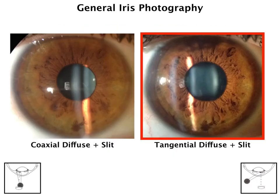These two images really highlight why tangential illumination is important when taking iris photographs. If we look at the picture on the left — a coaxial diffuse light plus a slit beam — you can see the iris, but you lose a lot of the details, especially the three-dimensional details present within the iris. Whereas if you do a tangential illumination, it really helps to highlight the crypts or any changes within the iris.